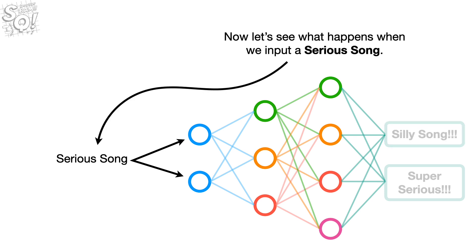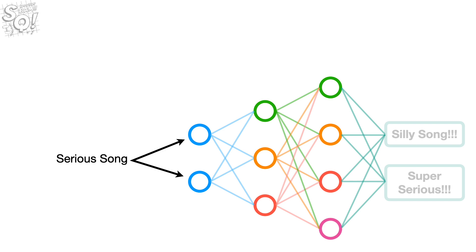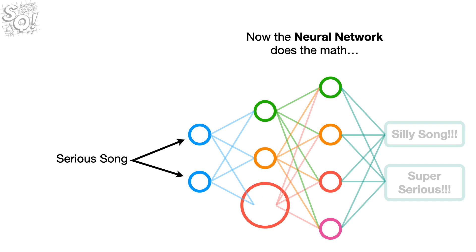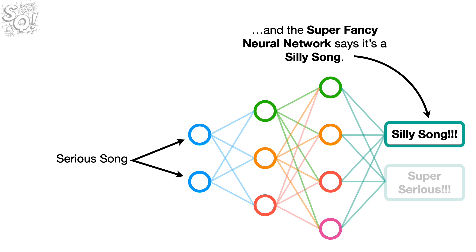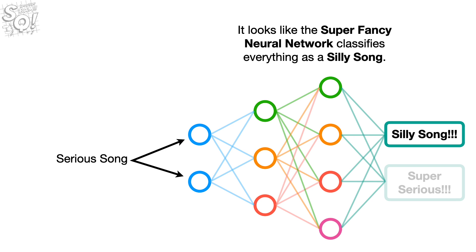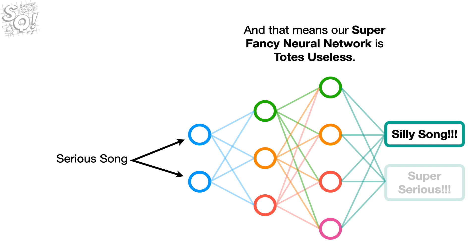Now let's see what happens when we input a serious song. Serious song — yeah, it's a serious song. Now the neural network does the math — boop, boop, beep, beep, boop, boop, boop — and the super fancy neural network says it's a silly song. It looks like the super fancy neural network classifies everything as a silly song, and that means our super fancy neural network is totes useless.